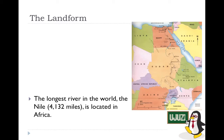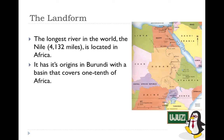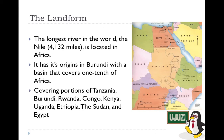Another important landform is the River Nile. The River Nile is the longest river in the world, stretching 4,132 miles. It is located in Africa and its source is predominantly from Burundi. The River Nile basin covers one tenth of the African continent, and the river passes through Tanzania, Burundi, Rwanda, Congo, Kenya, Ethiopia, Sudan, and Egypt.